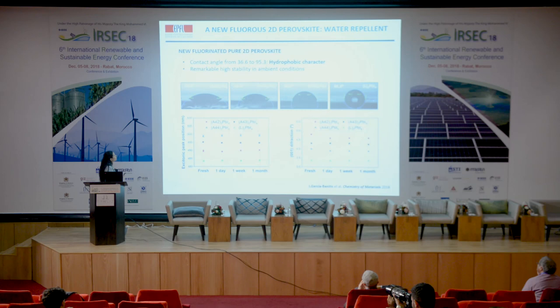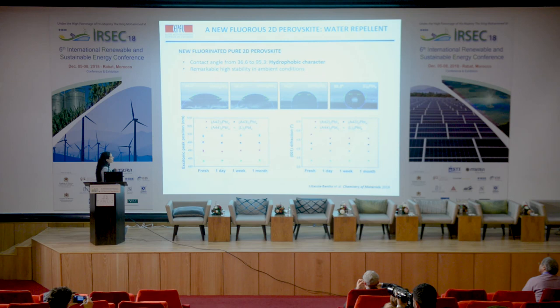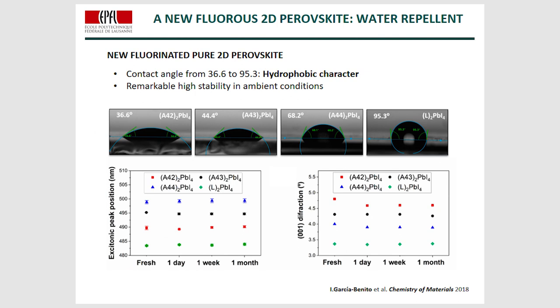We also measured the contact angle between a drop of water on the top of a thin film of this material. The angle goes from 36.6 degrees up to 95.3 degrees, which corresponds to a completely hydrophobic surface. So we could impart to the 2D perovskite the water-repellent properties of the organic cations. The stability of this perovskite was confirmed by measuring the absorption, exciton peak position, and XRD pattern — it was very stable over one month in ambient conditions.